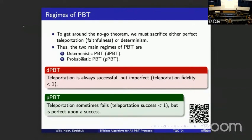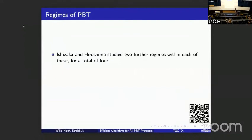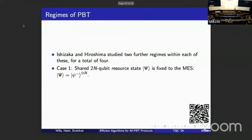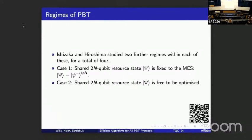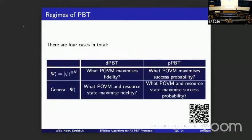In probabilistic PBT (PPBT), the protocol sometimes fails, so success probability is below one, but upon success we get perfect teleportation. Ishizaka and Hiroshima studied two further choices of resource state in each case, giving four total kinds of PBT. In one case the resource state is maximally entangled — say n Bell pairs — and in the second case the resource state can be anything and we optimize it.